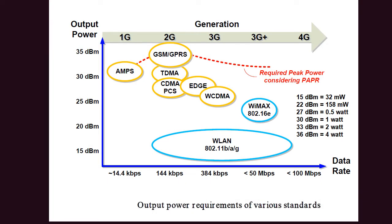The first slide shows the graph between the output power requirement for a power amplifier or transmitter and the data rate in different wireless standards. One can see there is some similarity and some differences with the evolution of different wireless standards. Starting from 1G, it had very low frequency, low data rate, and the output power was around 30 dBm.